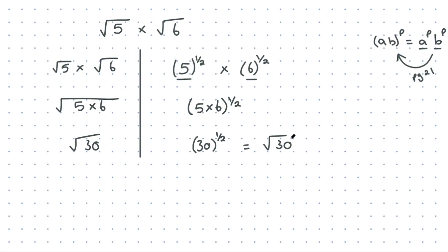Hopefully you can see that both of these strategies are the same — they use the same ideas. The way we write it down mathematically looks slightly different, but the strategy is the same underneath. You're taking two separate surds or two separate indices and combining them into one, and we get the same answer both ways.